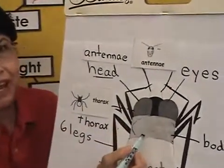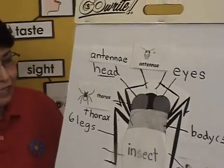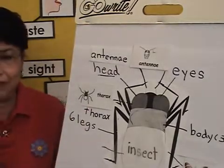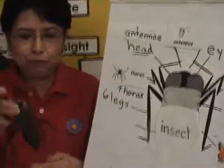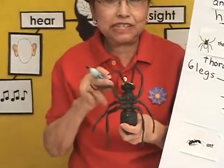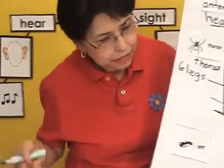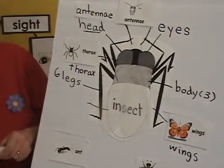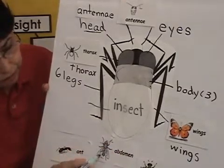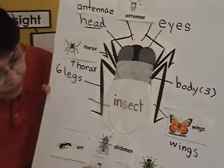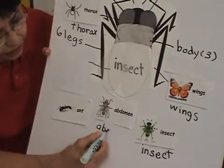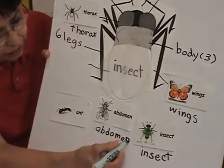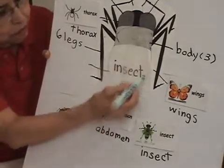Now, what do you think is the purpose of the thorax? I can see that there are three legs on each side. You can see on our novelty insect right here, and if we turn him around, you can see the legs — there are three on each side. Now, what is the final part? What is the bottom part of the insect? That is what we call the abdomen, A-B-D-O-M-E-N, abdomen, which is the bottom part of the insect.